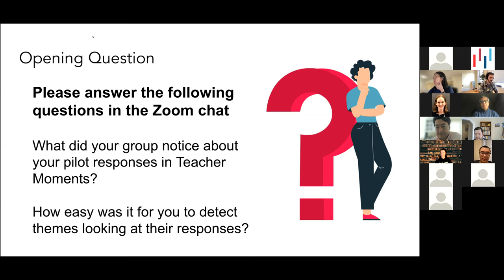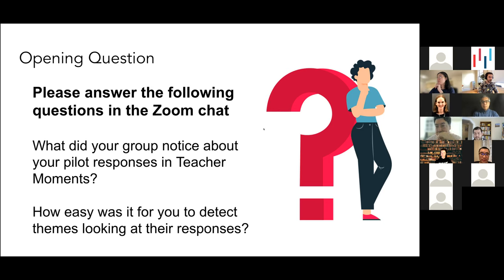Going through the responses — some people said it was difficult to detect themes, some said it was easier. A lot of people noticed variation in how people responded, which is always a good thing when you're looking at a scenario. Seeing that people are responding in different ways can be useful in terms of thinking about how your scenario is going. If you need more time, put your hand up or put an emoji in the chat.